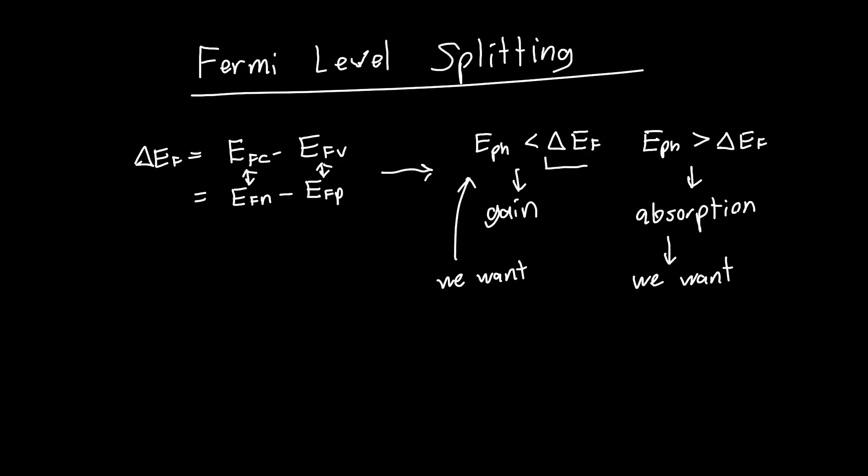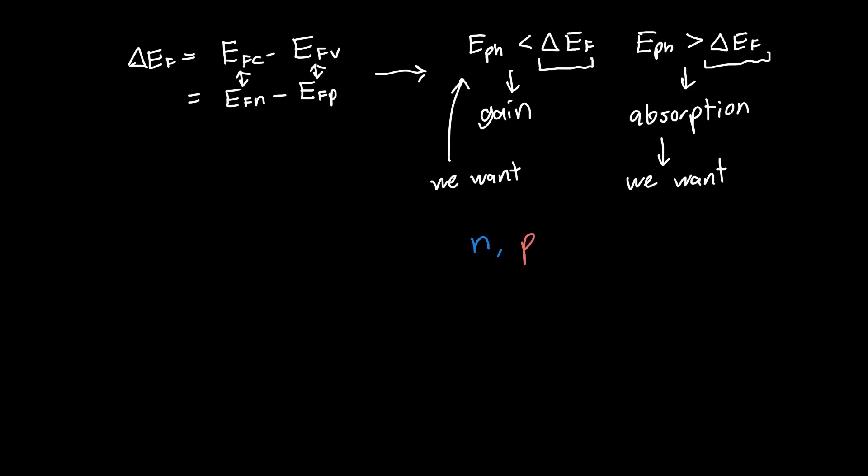But in general, we want to be able to control this Fermi level splitting delta EF. And the way that we do that is by injecting electrons and holes. So we know from a previous video on the quasi-Fermi level that if we've got our conduction band and we've got our valence band, and we've got our intrinsic Fermi energy, but this time I'm going to draw it slightly above.